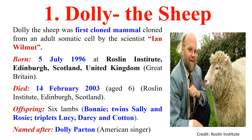Now let's discuss some famous cloned animals. First is Dolly the sheep — the first cloned mammal, cloned using somatic cell nuclear transfer by scientist Ian Wilmut. She was born on 5th July 1996 at the Roslin Institute, Edinburgh, Scotland, United Kingdom, and died on 14th February 2003 at the age of 6. She gave birth to 6 lambs: Bonnie, Sally, Rosie, Lucy, Darcy, and Cotton. Dolly was named after American singer Dolly Parton.